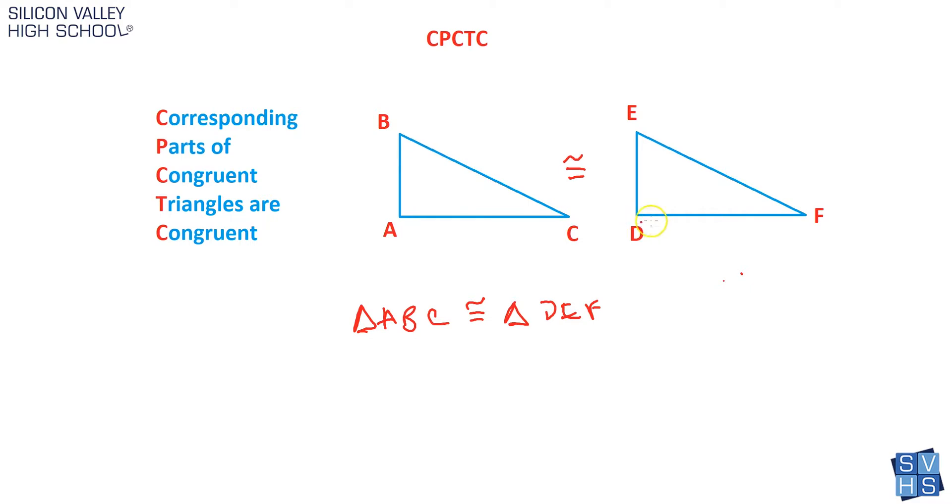You have to keep these consistent, and what that allows you to do is basically cheat when you're labeling corresponding parts. Because this is written in order, I can say that angle A is congruent to angle D—same corresponding relative position. Angle B is congruent to angle E, and angle C is congruent to angle F.